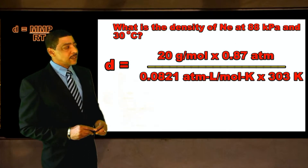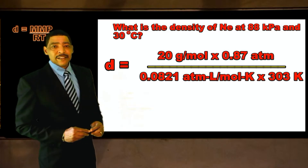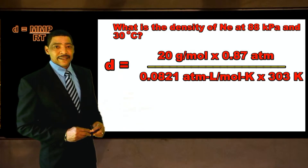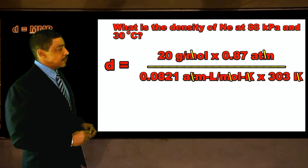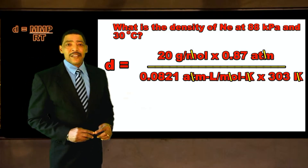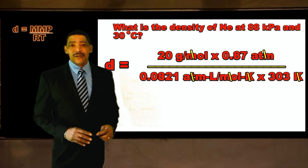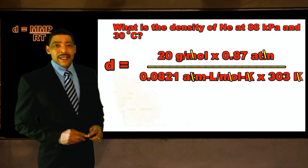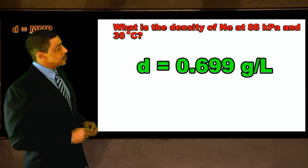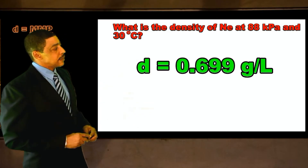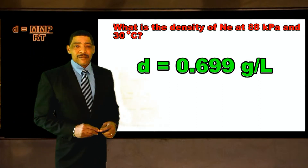ATM times liters divided by moles times k times 303k. Clearly the moles, the atmospheres, and the k will cancel, leaving us with units of grams per liter, which are the units for density. The numerical value for the density of the sample will be 0.699 grams per liter.